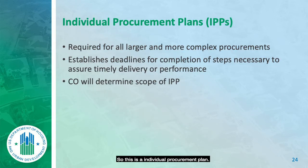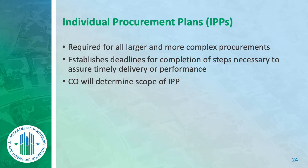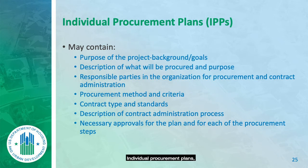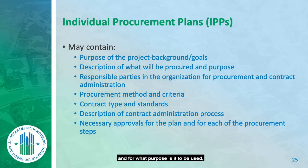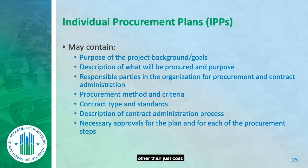This is an individual procurement plan — the IPP. It's required for larger and more complex procurements, though I do them for every quote, bid, or RFP to stay consistent. It gives you established lines to remain aware of and helps you determine the scope of the RFP. IPPs may contain a description of the work requirements, what you're procuring and for what purpose, who's assigned, and help establish the procurement method — whether a bid or quote for low-cost award, or an RFP.